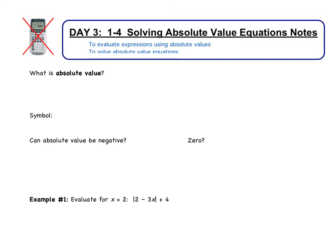You should have seen this in algebra 1, but it may have been a while since you've seen absolute value. Absolute value just means the distance from 0 — how far is an object away from 0 on a number line? The symbol is these bars. So we could take the absolute value of 3, the absolute value of negative 5, the absolute value of a thousand. It's all saying how far are those numbers from 0.